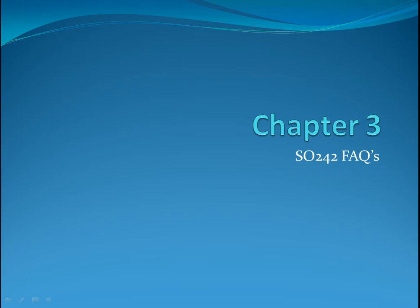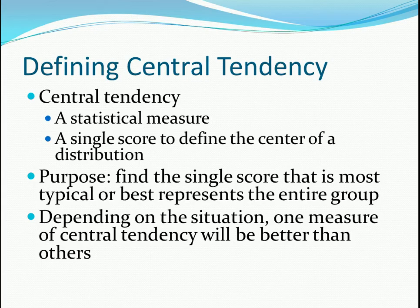Hello students and welcome back to your study help videos. This one is chapter 3, which was measures of central tendency. Central tendency is a statistical measure — all three of them are — mean, median, and mode. They are single scores that attempt to identify or define the center of a distribution. The purpose is to find the single score that is most typical or best represents the entire group.